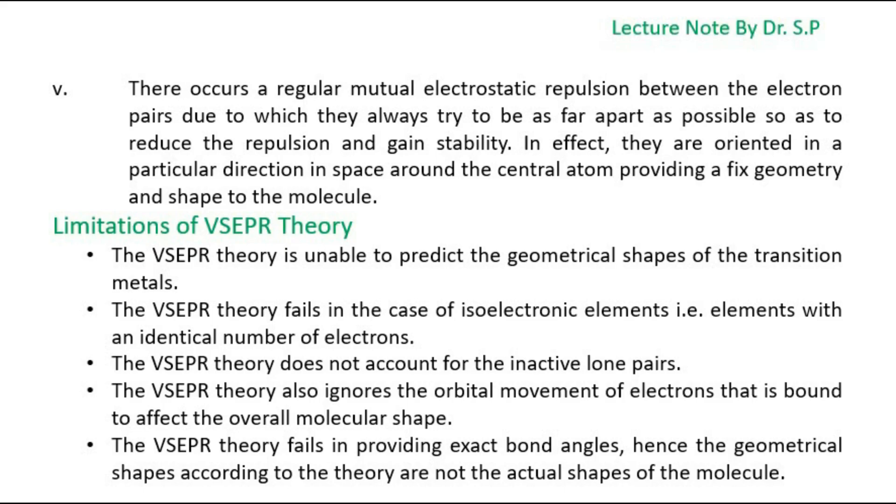Limitations of VSEPR Theory. The VSEPR Theory is unable to predict the geometrical shapes of the transition metals. The VSEPR Theory fails in the case of isoelectronic elements, i.e., elements with an identical number of electrons.